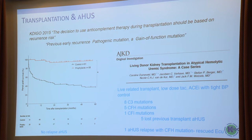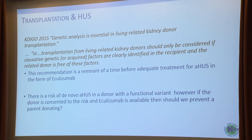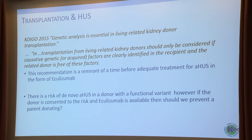Do we need to readdress that? We also said genetic analysis is essential in living-related kidney donor transplantation, and that transplantation from living-related donors should be considered only if causative genetic or acquired factors are clearly identified in the recipient and the donor is free from those factors. I'm not sure I believe that now. That recommendation was made before we had treatment for HUS in the form of eculizumab. Now there is a risk of de novo HUS in a donor with a functional variant, but if we're consenting donors to the risk and eculizumab is available, should we prevent a parent from donating to their child?